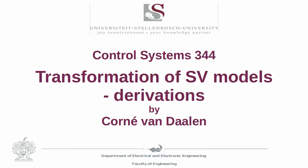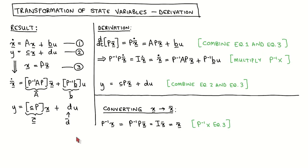In a previous video we transformed a state variable system by changing the definition of the states, and we also transformed a state variable system to an equivalent transfer function representation. In this video we derive these results. We first look at the transformation of state variables. The result we used previously is on the left hand side. Let's quickly recap.